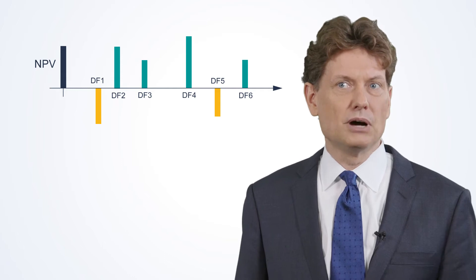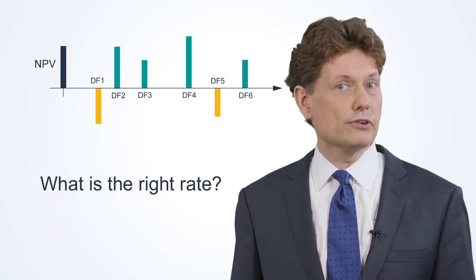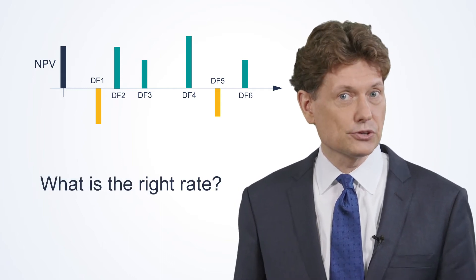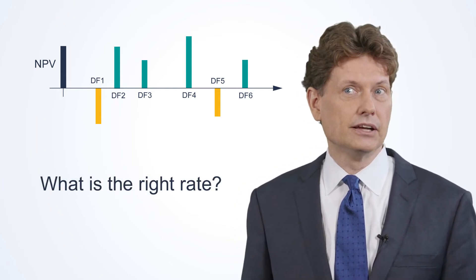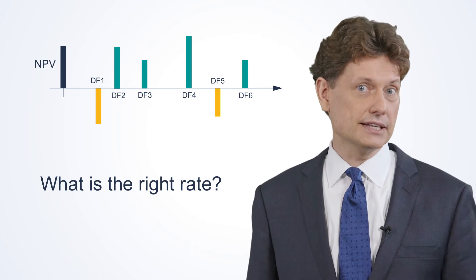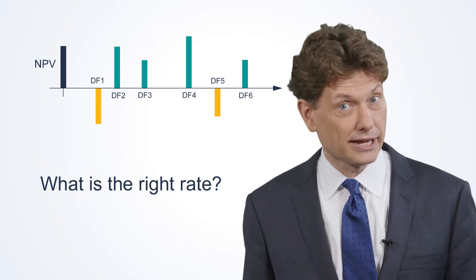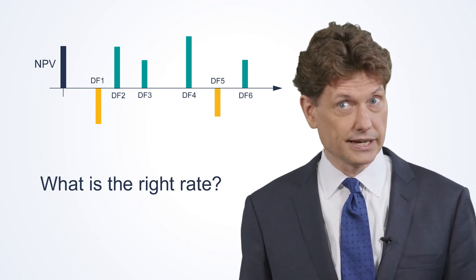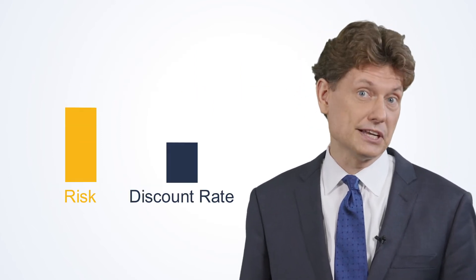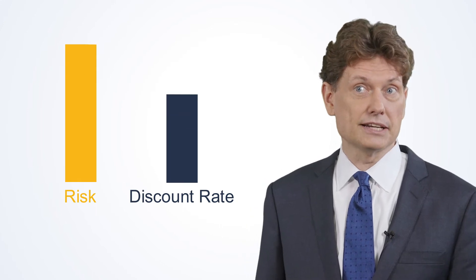In the first part of this module, we'll figure out what that right rate is for discounting. You've already heard some hints about this in previous modules. The simple answer is: higher risk means a higher discount rate.